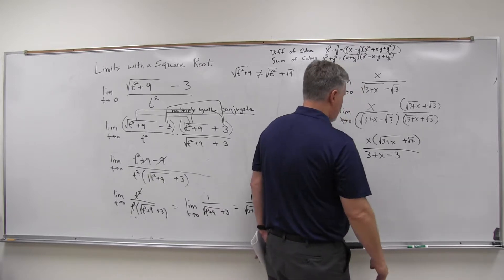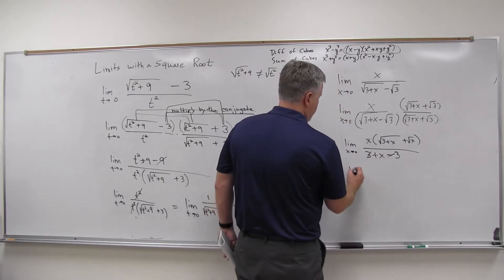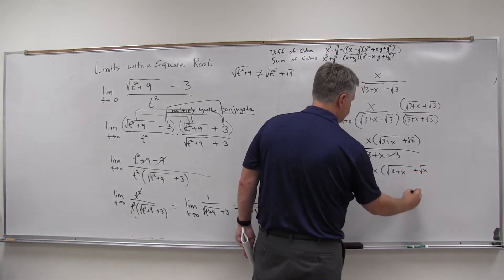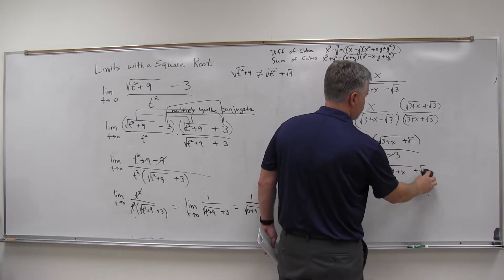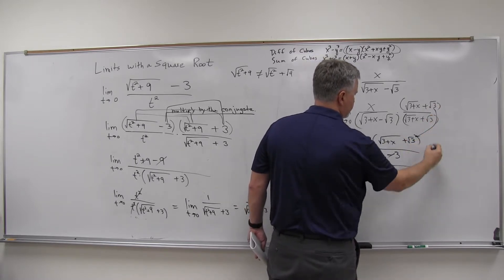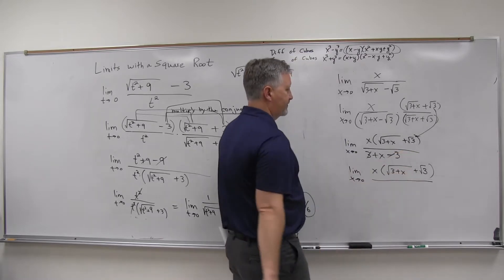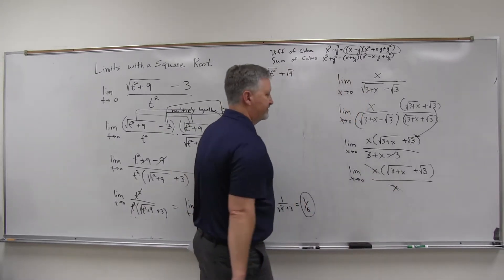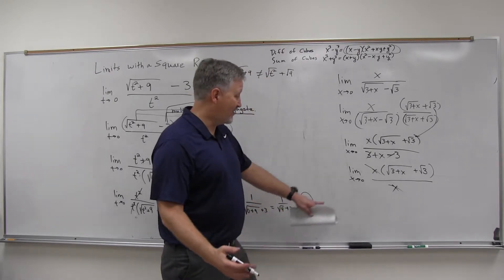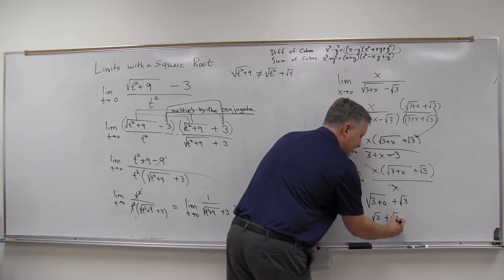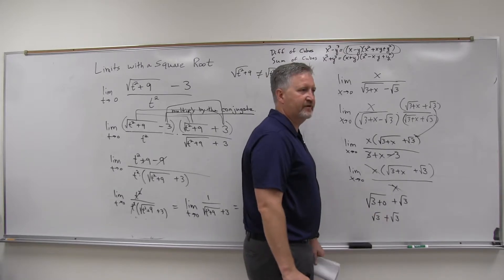Three minus three — look at that, those cancel. I had square root of x there but it's square root of three. So the top simplifies and the bottom is just x. Those x's now cancel. We got it — now we can let x go to zero. We get the square root of three plus zero plus the square root of three, which is the square root of three plus the square root of three. Like radicals: one square root of three plus one square root of three is two square root of three.